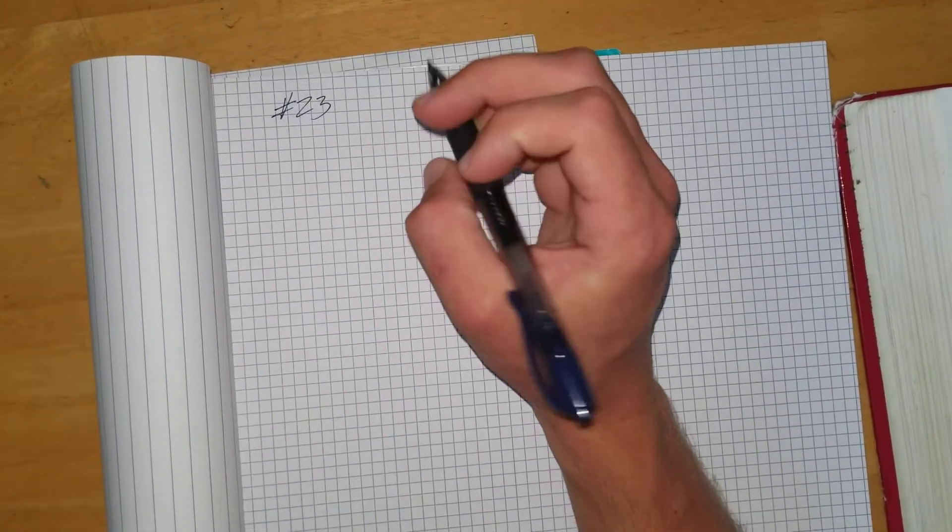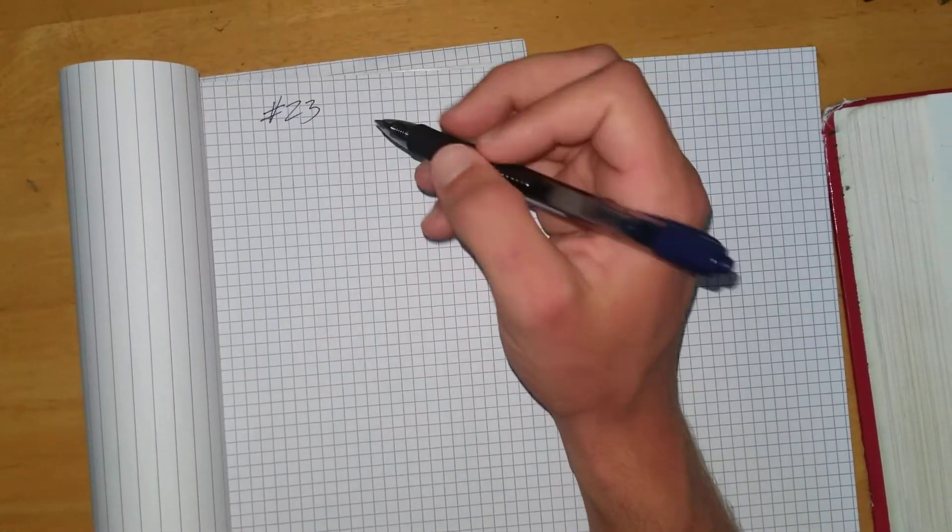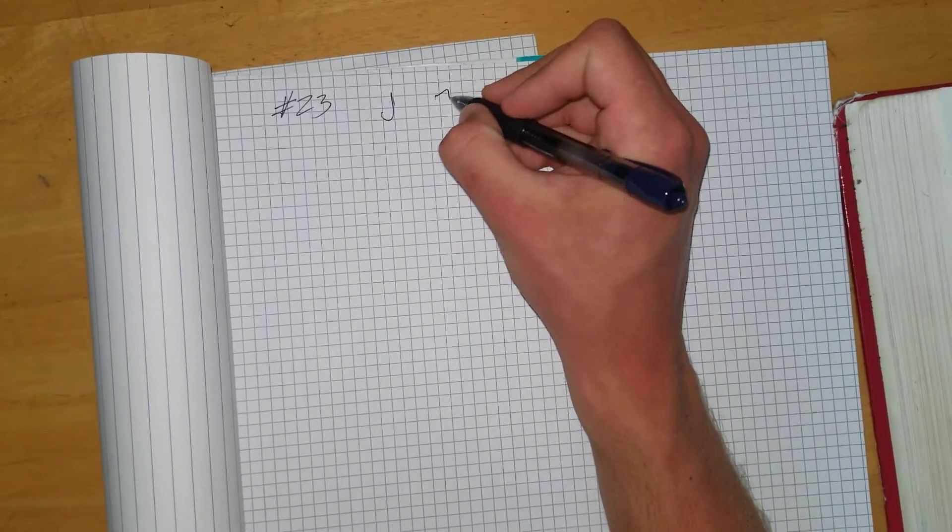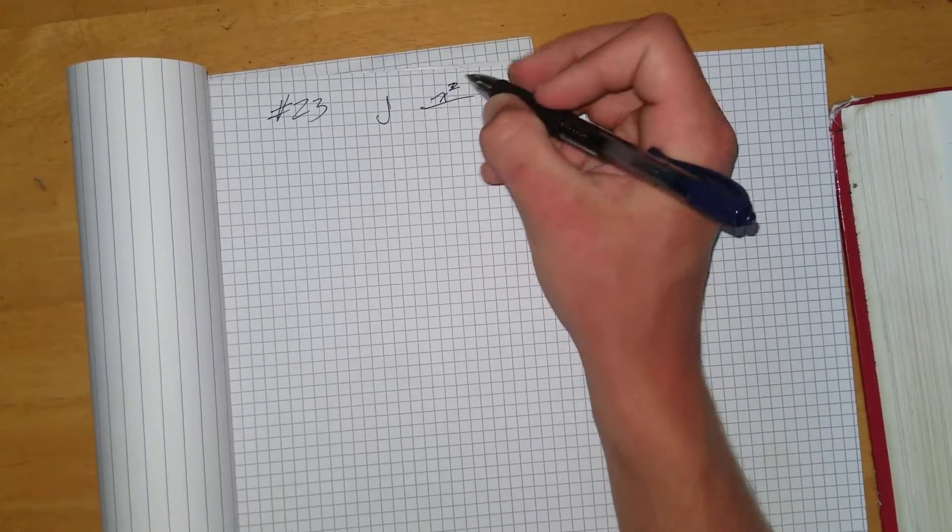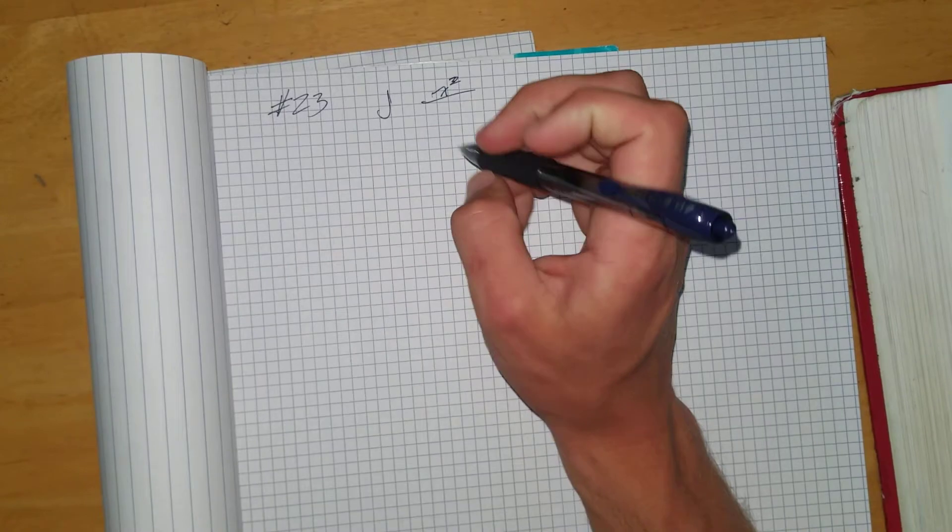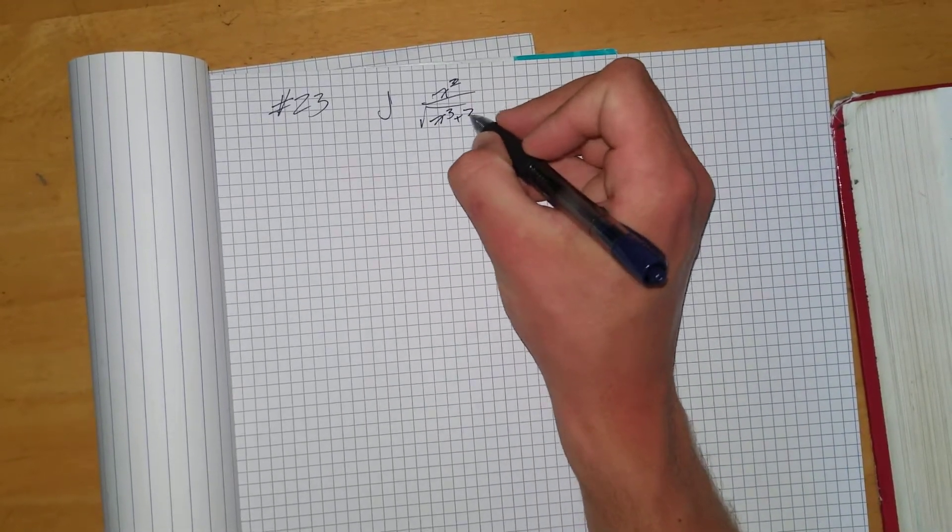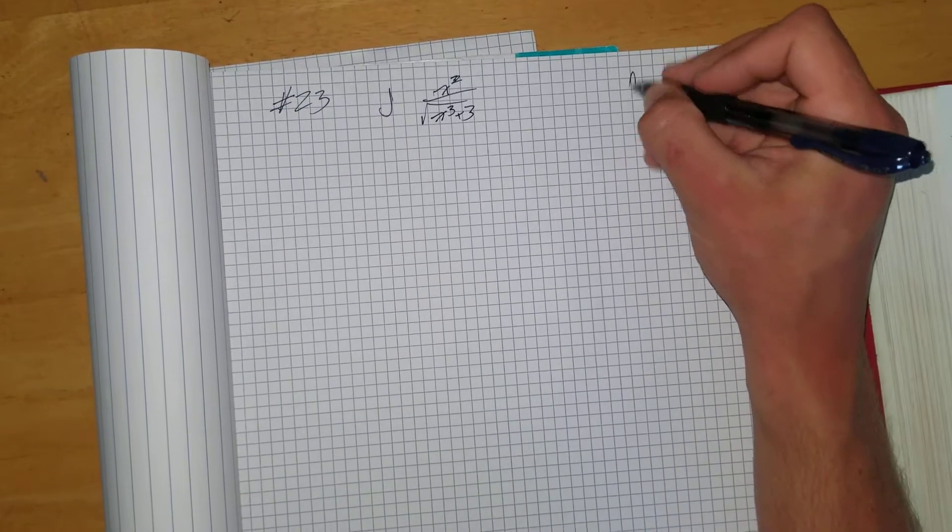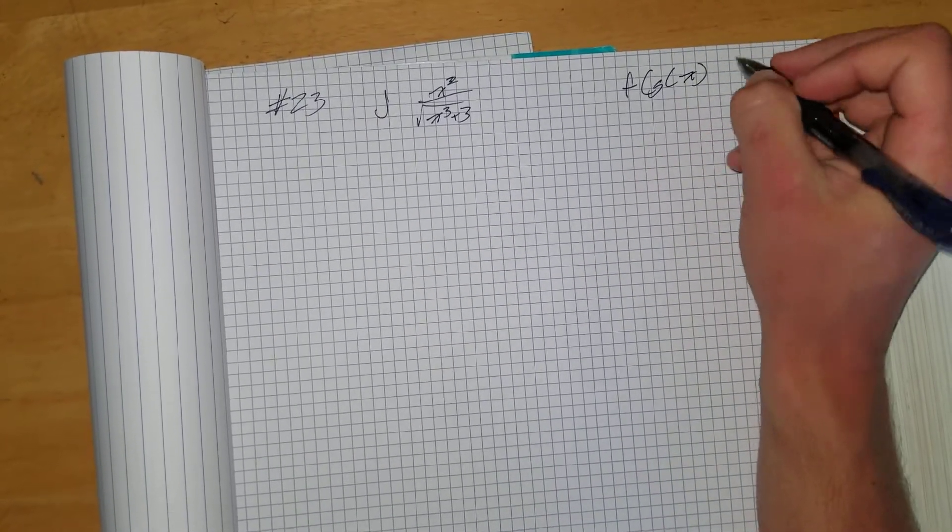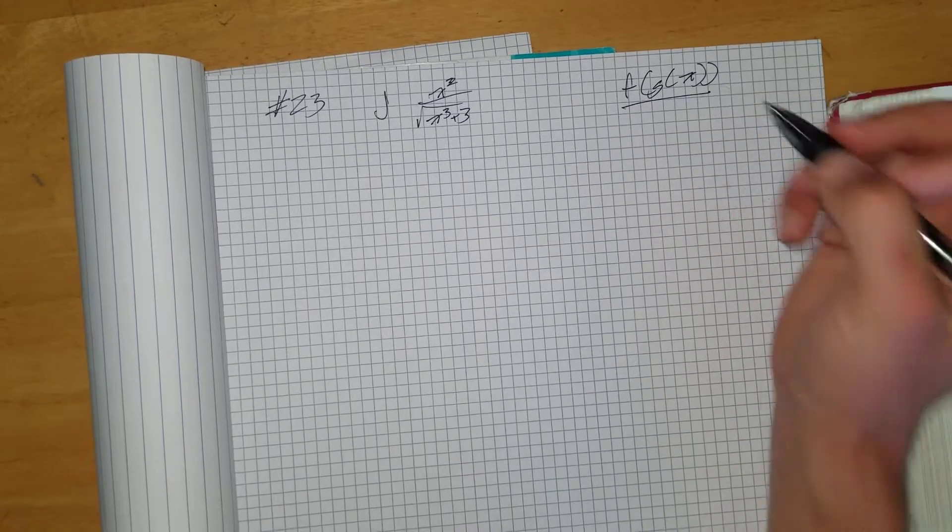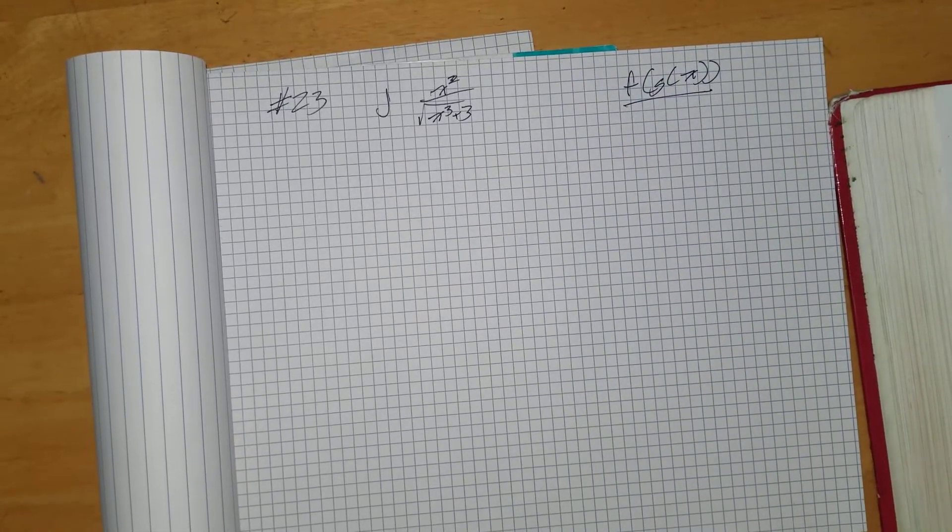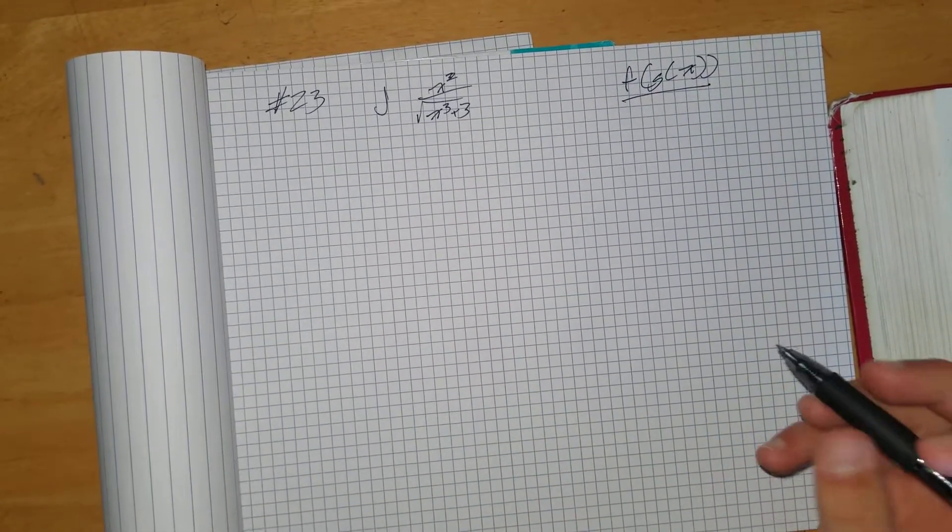I am going to walk through number 23 on page 367. This is an example of integrating a composite function. So if you remember, a composite function is just a function within a function. So this is a composite function right there. So we are integrating a composite function.